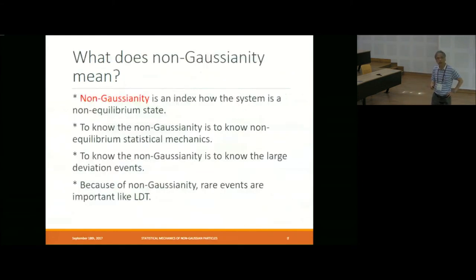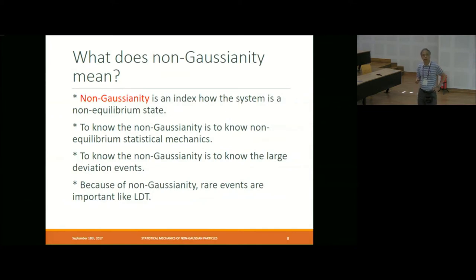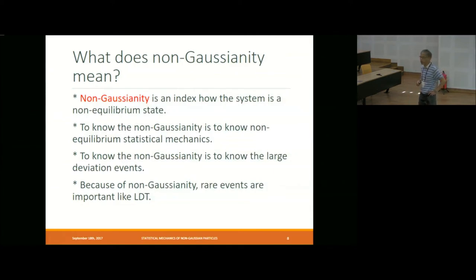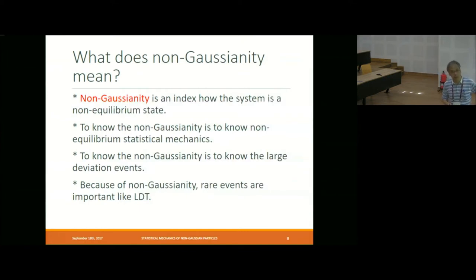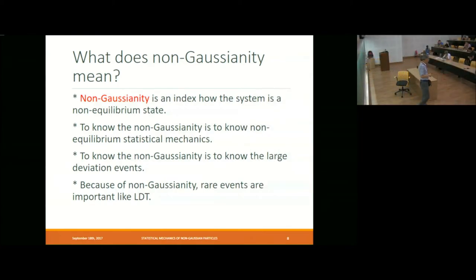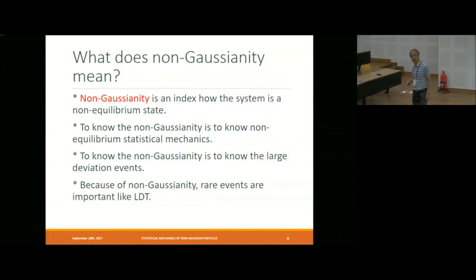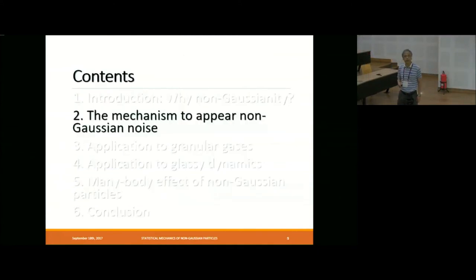So what does non-Gaussianity mean? Non-Gaussianity is an index of how much a system is in a non-equilibrium state. To know the non-Gaussianity is to know the non-equilibrium statistical mechanics, and to know the large deviation events. Because of non-Gaussianity, rare events become important, like in large deviation theory. These are the statements and motivation to study non-Gaussian noise.